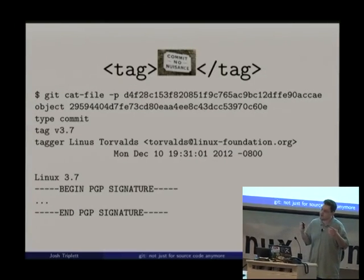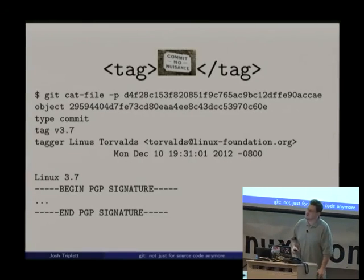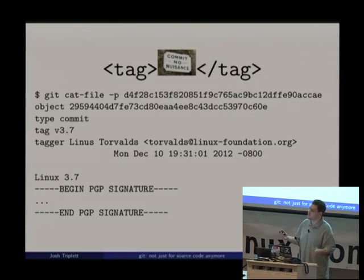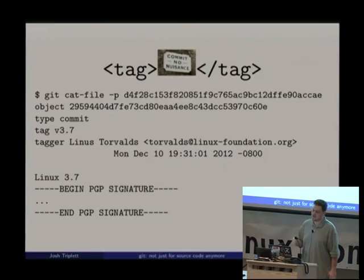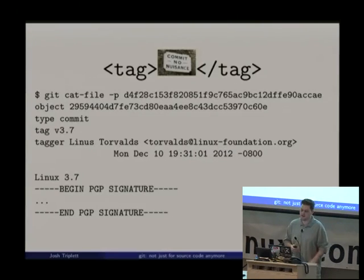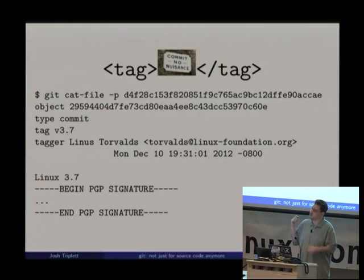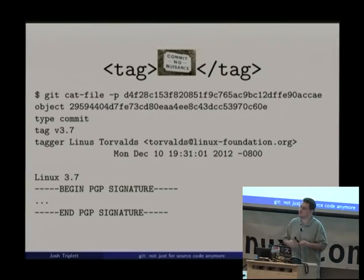Tags always point to a commit. Using git cat-file -p — not a command you need for everyday use, but if you really want to show a raw object — here I'm showing the hash for the v3.7 tag. It's pointing at a commit with a particular hash, marked by 'object'. It has a name, a person who tagged it, a timestamp, a message, and a signature, which I left out for space.